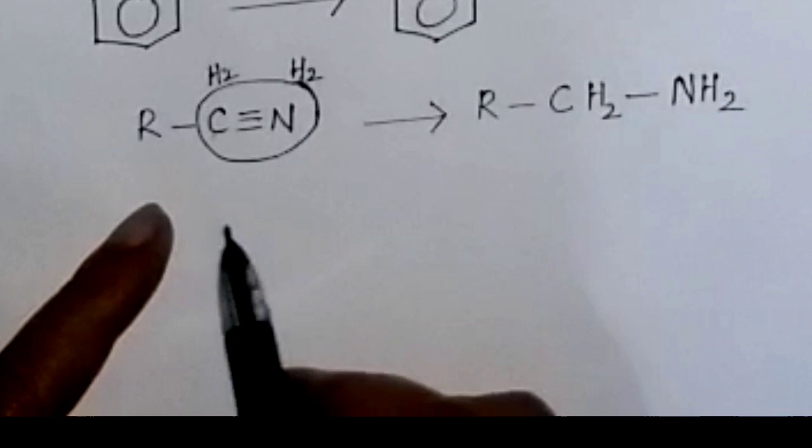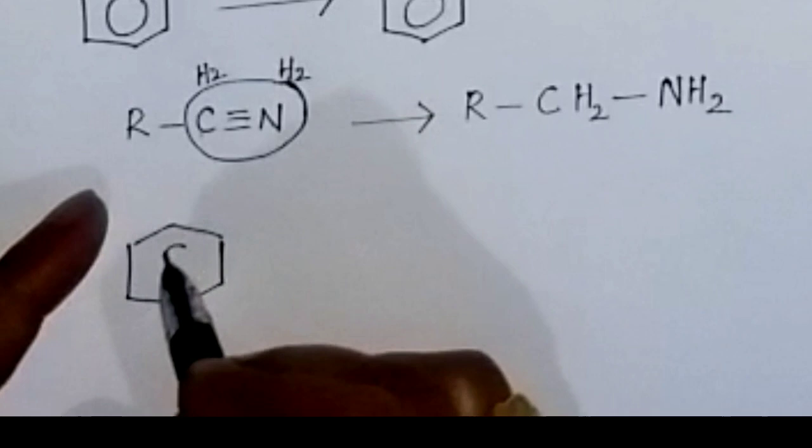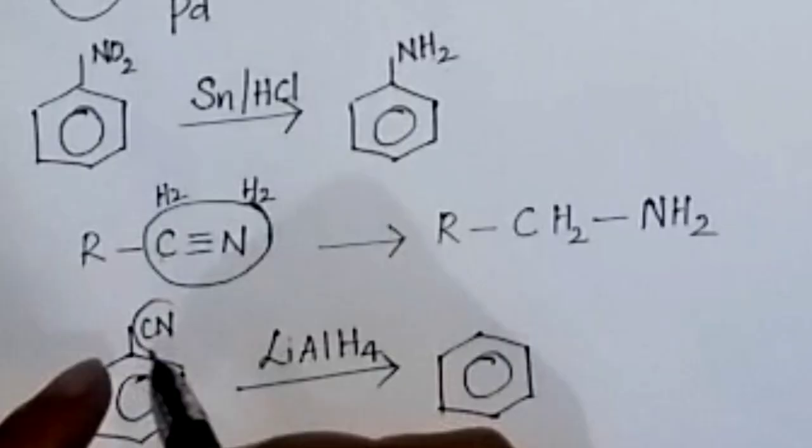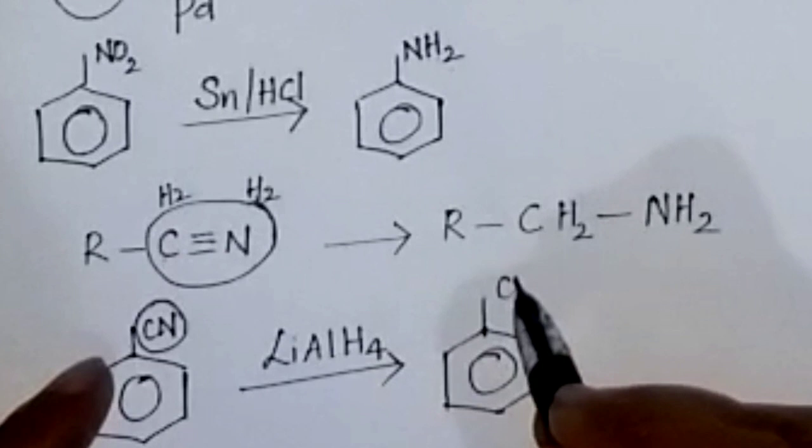Another example: any compound with a cyanide group, on reduction using lithium aluminium hydride, converts the cyanide group to CH2NH2, giving the corresponding amine.